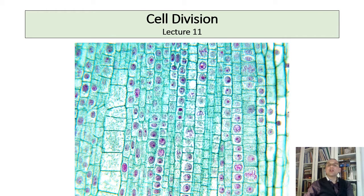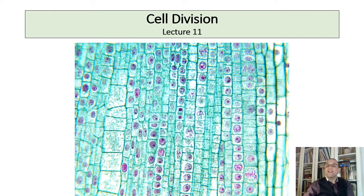We know that when cells reach a certain size, they divide. For many years, however, scientists did not know what caused a cell to begin to divide. Now we know that the outer surface of a cell grows more slowly than the volume of the material inside the cell. Scientists call this the surface-to-volume ratio. When the surface of a cell is no longer large enough to let in the proper amount of food and let out waste, the cell divides.